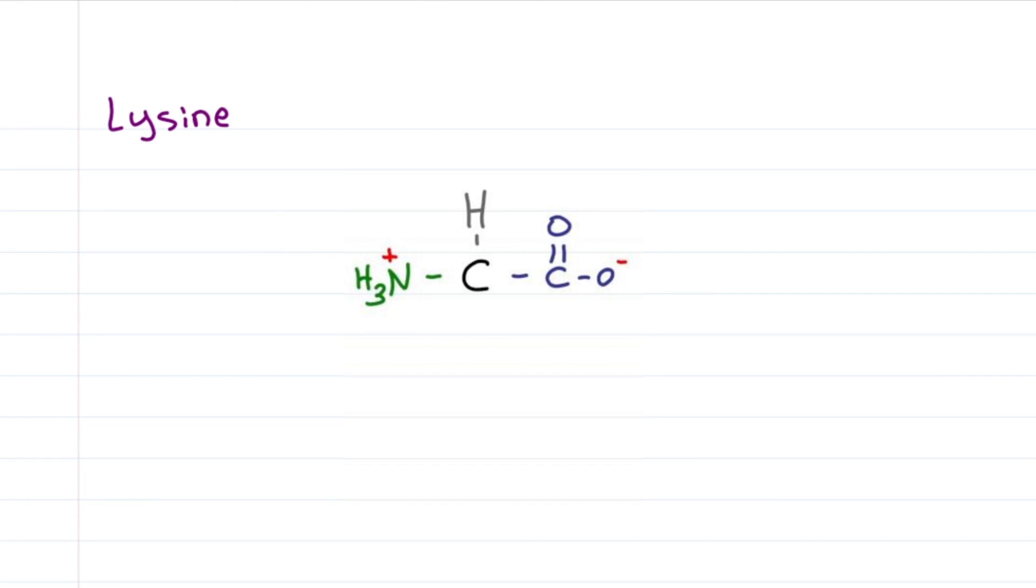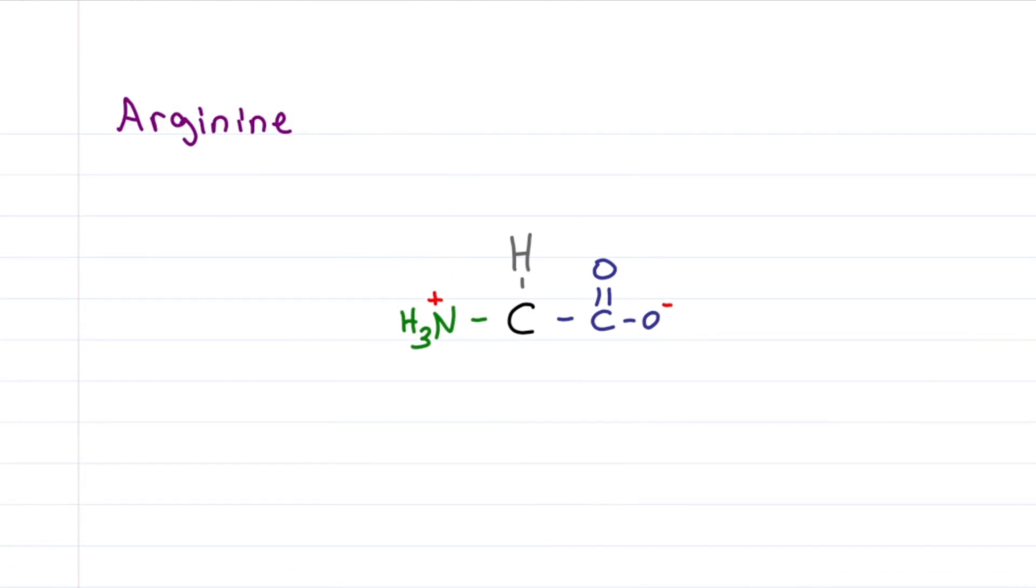Lysine is easy. The first three letters are LYS, but we've already used L for leucine. Okay, we'll use something else. Okay, we'll use K. We know it's four carbons, so just draw them in a row, add your basic nitrogen, fully protonate at physiological pH, and you have your NH3+.